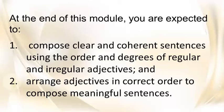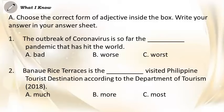A. Choose the correct form of adjective inside the box. Write your answer in your answer sheet. 1. The outbreak of coronavirus is so far the blank pandemic that has hit the world. A. bad, B. worse, C. worst. 2. Boni Way Rice Terraces is the blank visited Philippine tourist destination according to the Department of Tourism 2018. A. much,